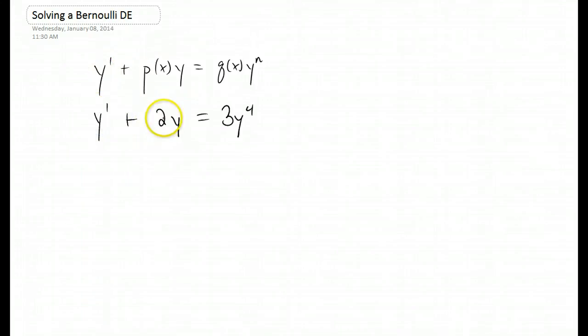Here's an example. My p of x is 2, our q of x is 3, and our n value I just made up is 4.